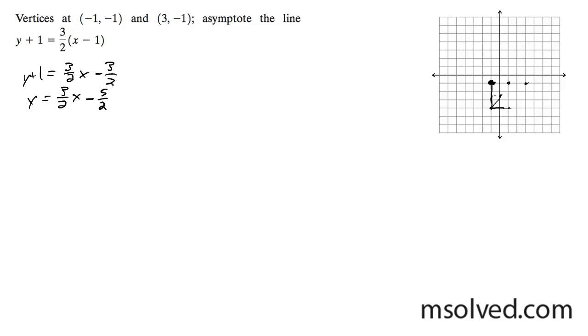So what that means is this intercepts the y axis at negative 5 halves. And it has a slope of 3 halves, so it's going to move down 1.5 when it moves over to the left one. So my y is going to be located at 1, negative 4 here, which means the other one's going to be located right here.